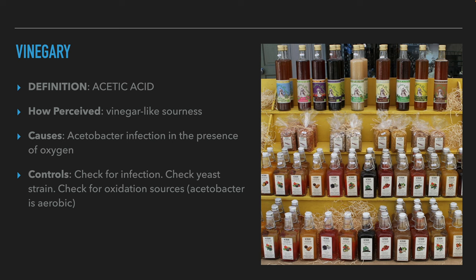The next aroma and flavor we will discuss is acetic acid. Acetic acid is the acid that gives vinegar its taste. We feel acetic acid like vinegar. Acetic acid comes from an Acetobacter infection. Acetobacter is a bacterium that converts alcohol to acetic acid in the presence of oxygen. To avoid acetic acid formation, the brewer should make sure that there is no contamination, make sure that the yeast strain is clean and healthy and make sure that there is no source of oxygen.